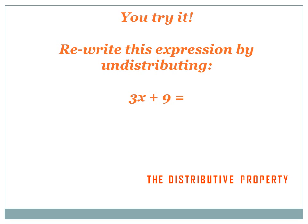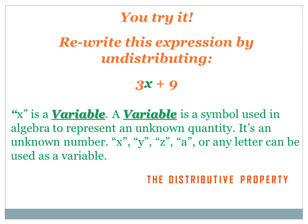Rewrite this expression by undistributing: 3x plus 9. Don't get worried — I know that looks a little confusing. Some of you haven't used variables too much, so let me explain. 3x plus 9. The x is referred to as a variable. A variable is a symbol used in algebra to represent an unknown quantity — it's an unknown number. X, Y, Z, A, or any other letter can be used as a variable. So one way to read this would be 3x plus 9, or 3 times some unknown number plus 9.